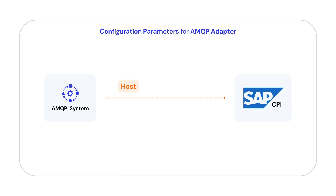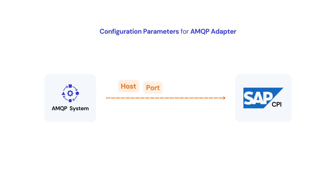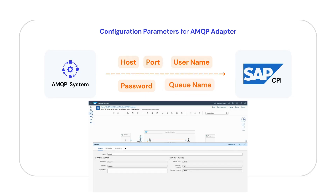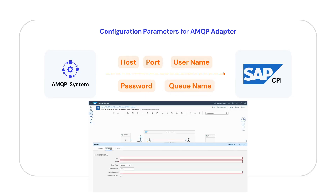You need to provide the host and port, and you also need to provide the user credentials. You also need to indicate the queue name from where you want to read the data or to where you want to publish the data.